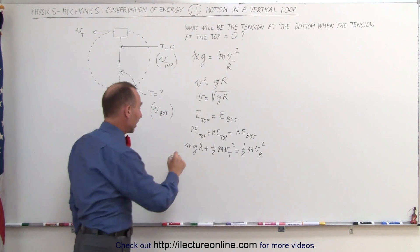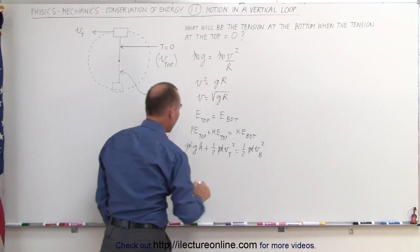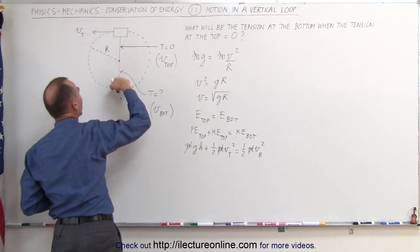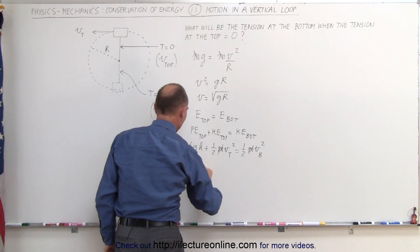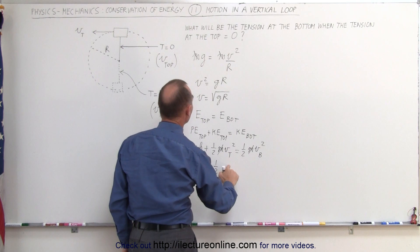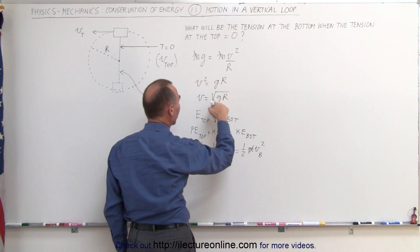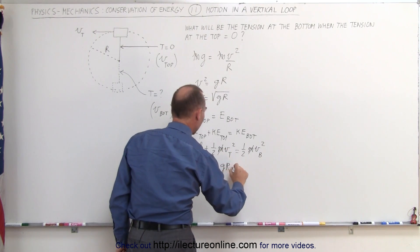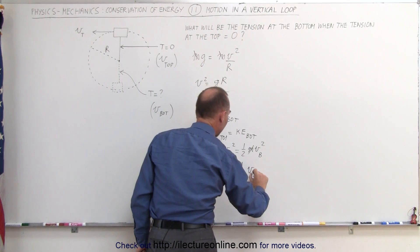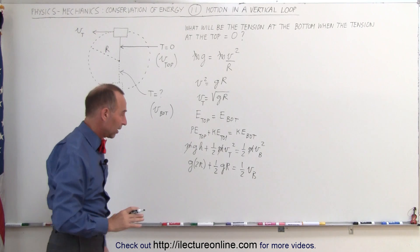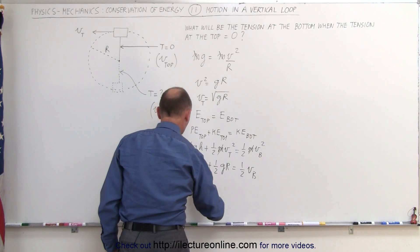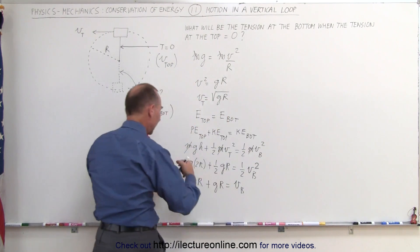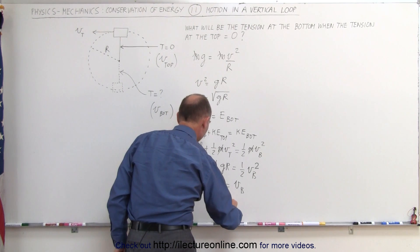The mass cancels out everywhere, so we don't need to know the mass. The height would be twice the radius — h equals 2r. So we have g times 2r, plus one-half times v_top², which equals g times r. That equals one-half v_bottom². Multiplying both sides by 2 gives us 4gr plus gr equals v_bottom squared. Combining those two, the velocity at the bottom squared is equal to 5gr.